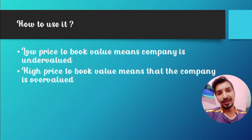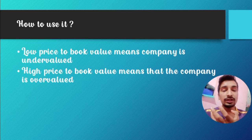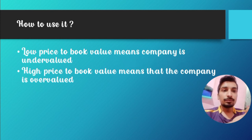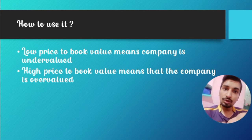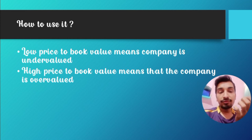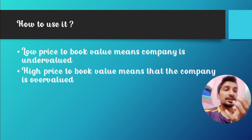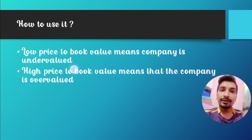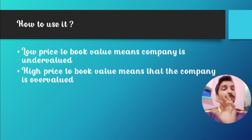So how do we use the price-to-book ratio? A low price-to-book value means the company is undervalued — not many people are buying it, which is why the price is low. This means the company's book value is higher than its share price, making it a good buying opportunity. Low price-to-book value indicates an undervalued and profitable company — you should buy it.